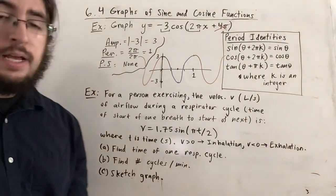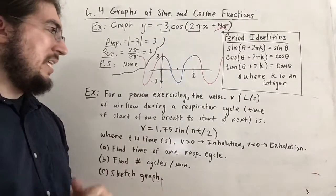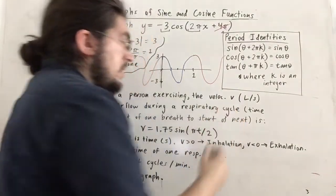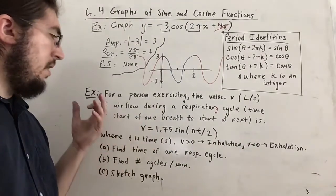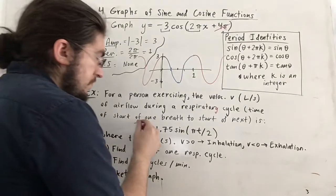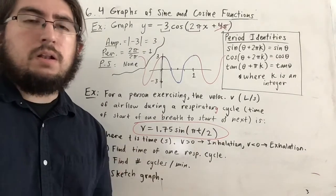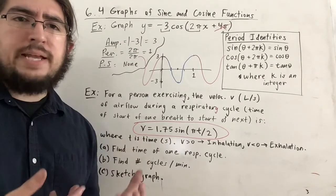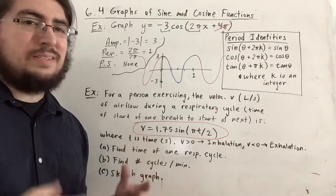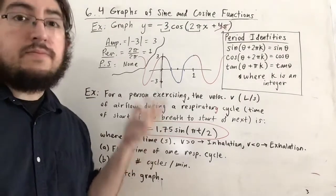For the final example: the velocity V in liters per second of airflow during a respiratory cycle — from the start of one breath to the start of the next — for a person exercising is given by V = 1.75·sin(πt/2), where t is time in seconds. Positive velocity means inhalation; negative means exhalation. The amplitude is 1.75, and πt/2 is the same as (π/2)·t, with no phase shift.